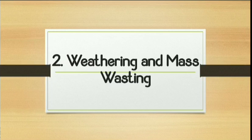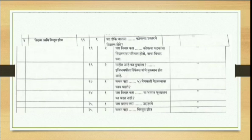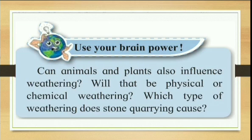That was all about the first chapter. Now we will discuss the second chapter, which is Weathering and Mass Wasting. In this chapter, the 'Use Your Brain Power' section — 'Can animals and plants influence weathering? Will that be physical or chemical weathering?' — such type of questions will not be asked.